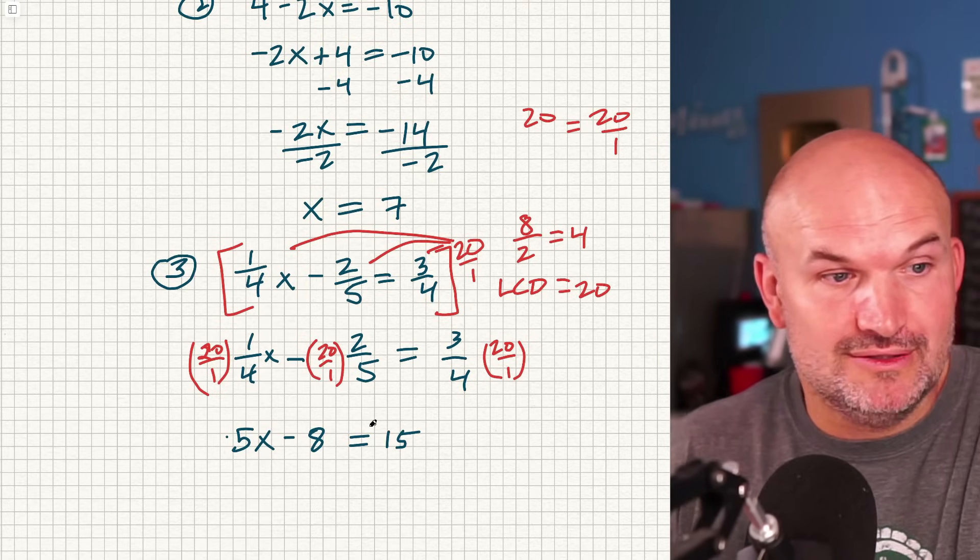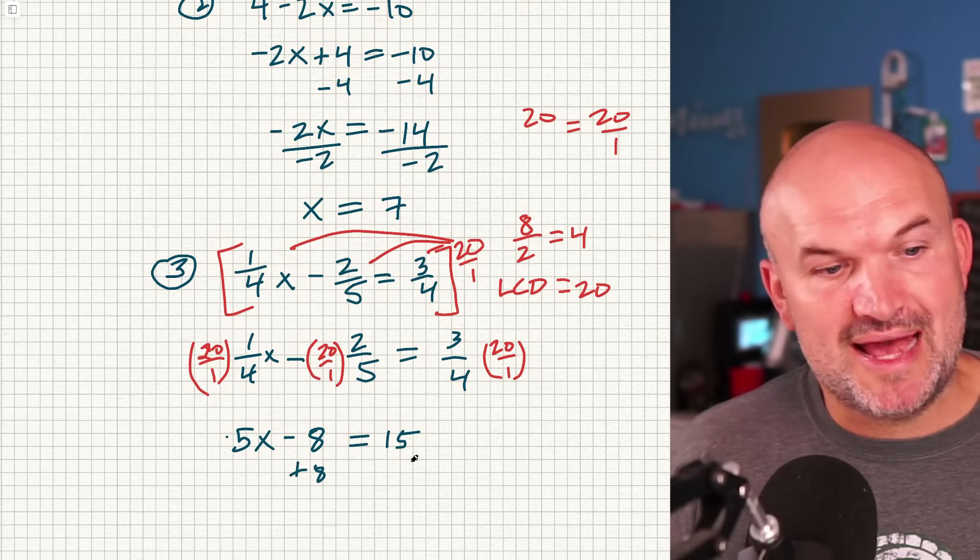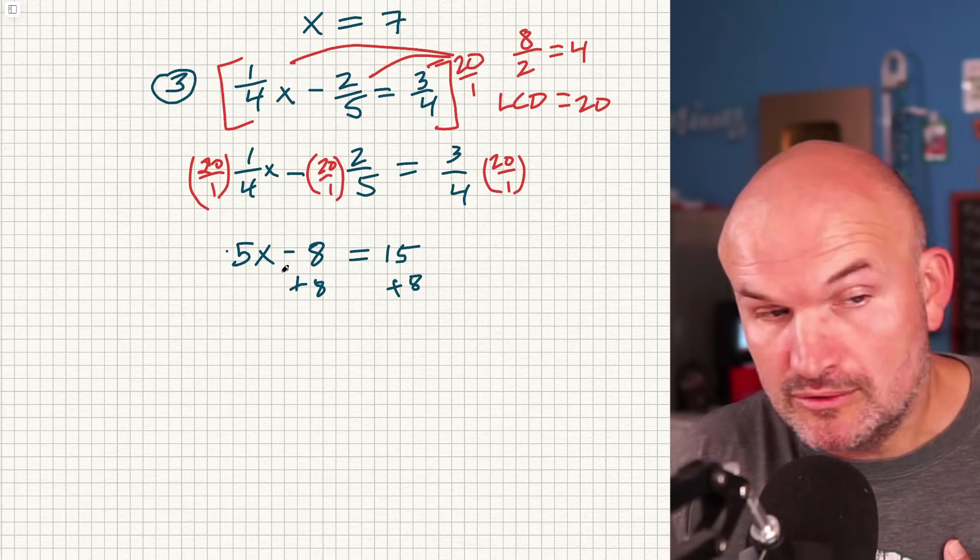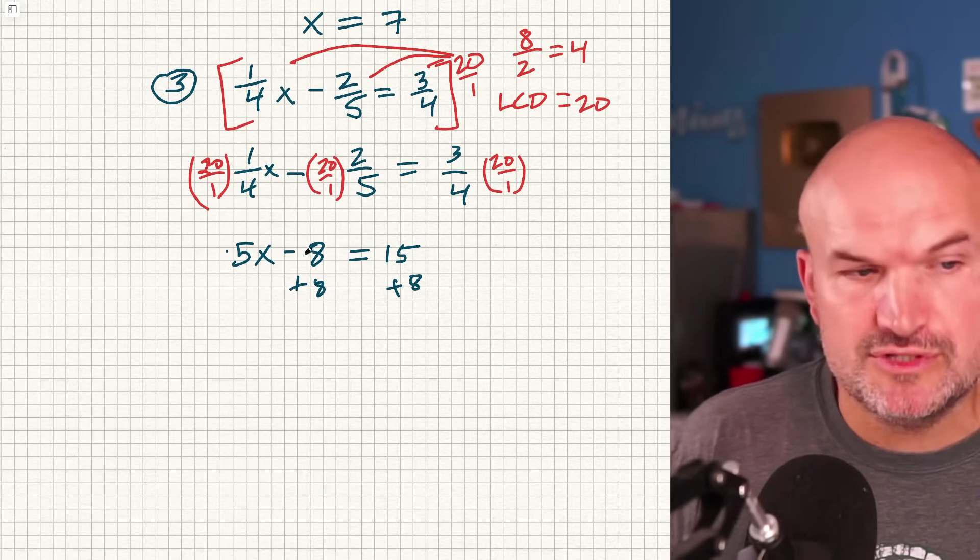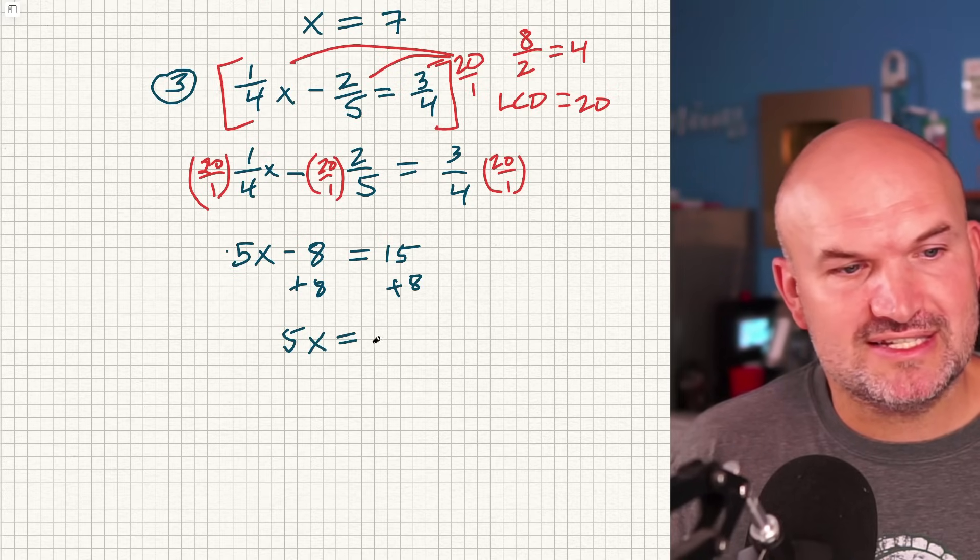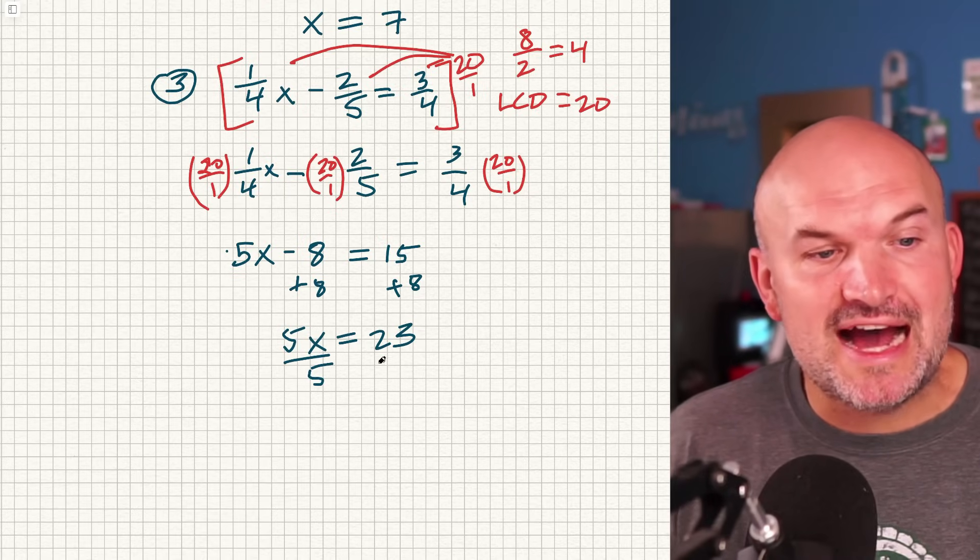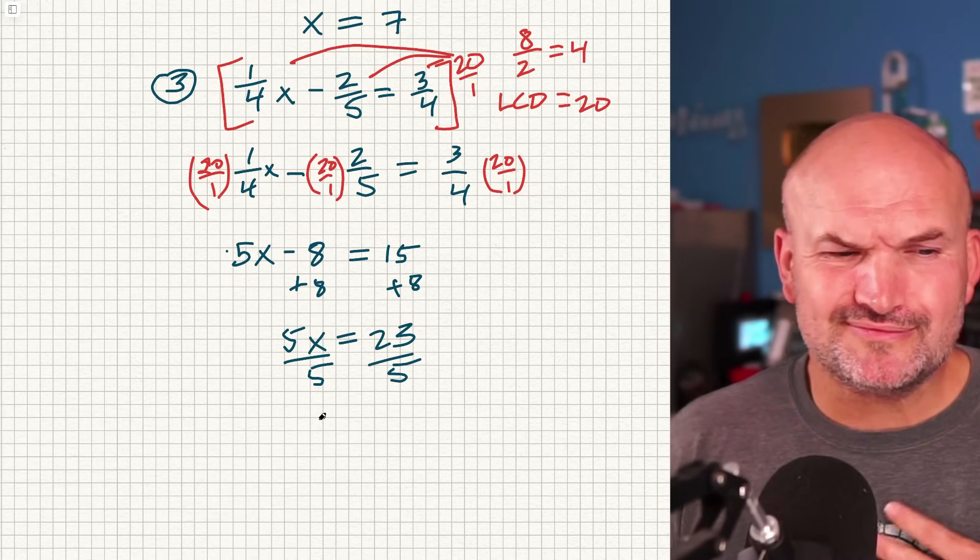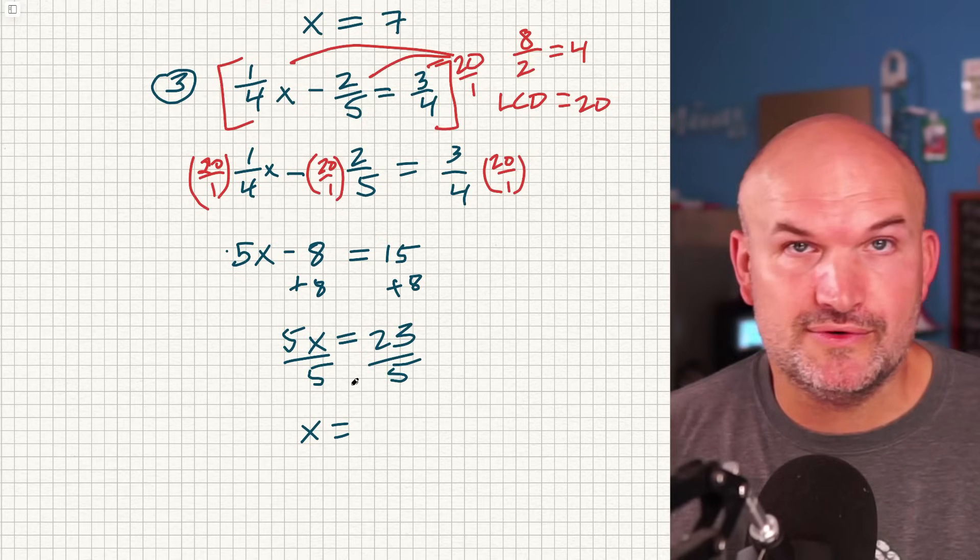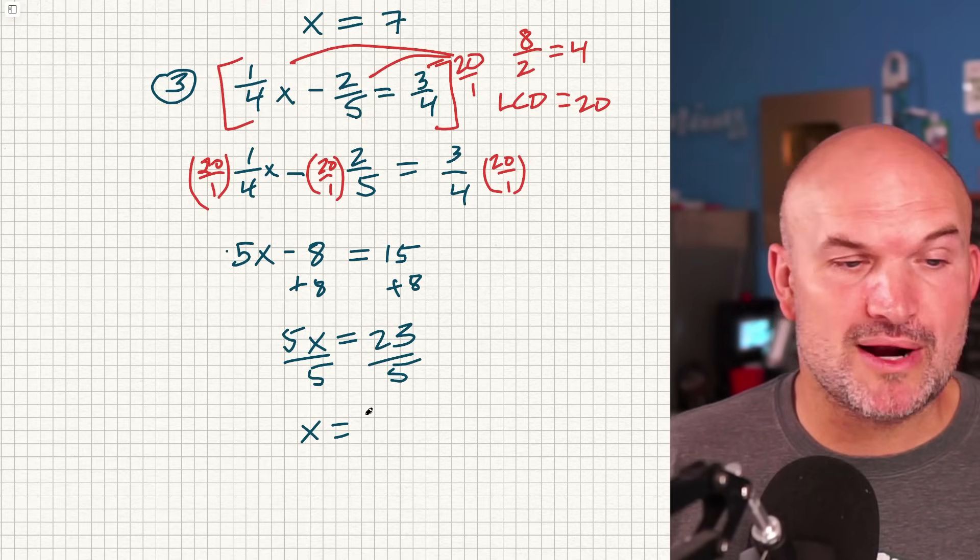So now I can go ahead and solve this. So when I do that, I'm going to add 8 to both sides. Because I want to undo addition and subtraction. So to undo subtraction, I got to add 8 on both sides. In that case, I'm going to get 5x = 23. Now I need to undo multiplication by 5. So I'm going to divide by 5 on both sides. And unfortunately, in this example, 5 does not evenly divide into 23, but that is okay. I can leave my answer as an improper fraction.